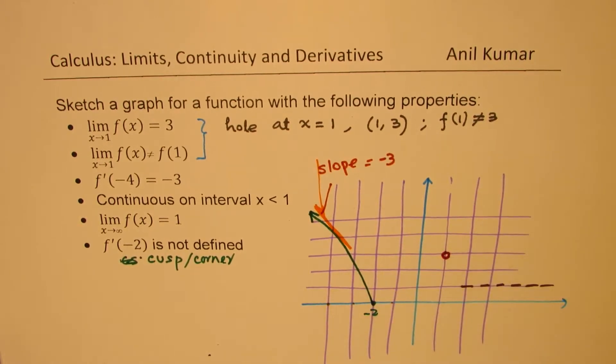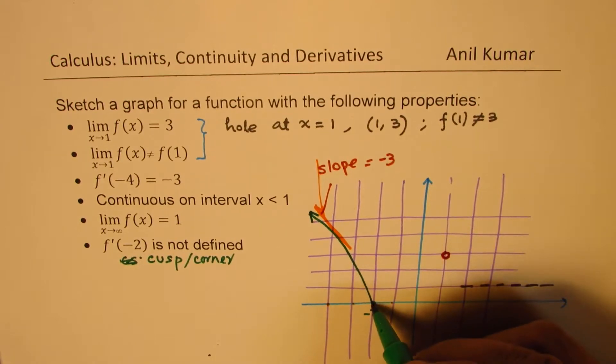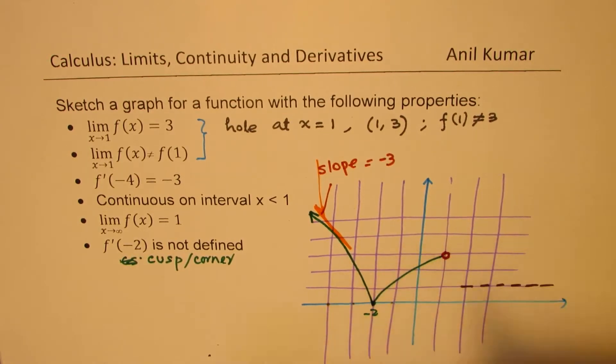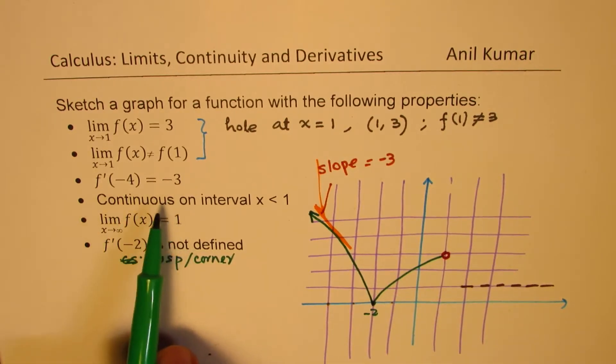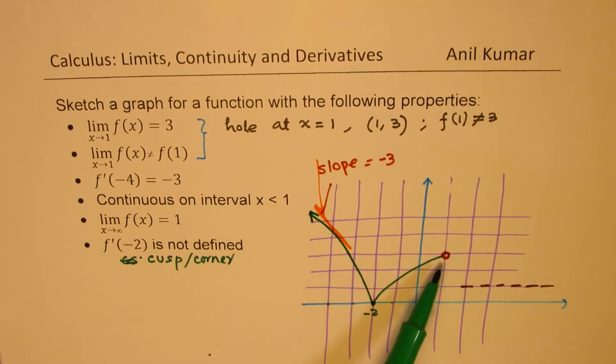So we could go from here to this place. Let's select this. Perfect. And then, after 3, so there's a discontinuity. Function is continuous on the left side of 1. Is that clear?